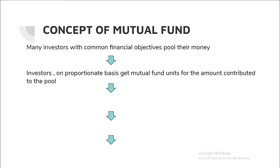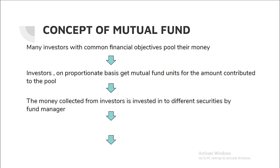Investors receive mutual fund units on a proportionate basis according to the amount they contribute. For example, if a mutual fund unit has a value of 100 rupees and an investor contributes 1000 rupees, they will be issued 10 units. The money collected from investors is then invested by the fund manager in different securities — equities, debt instruments, and a cash component — forming a diversified portfolio.